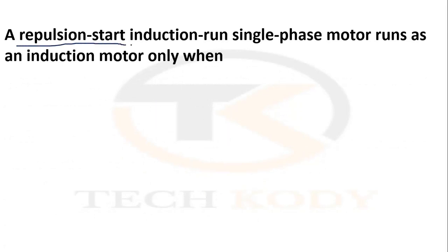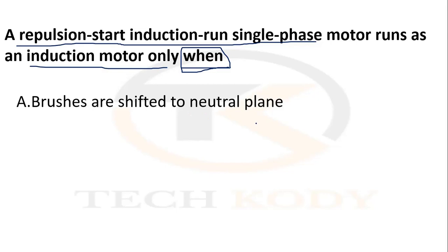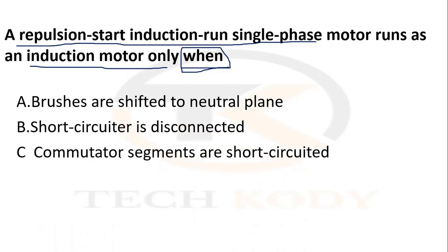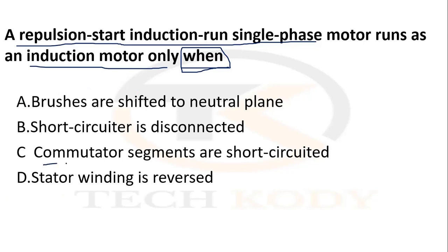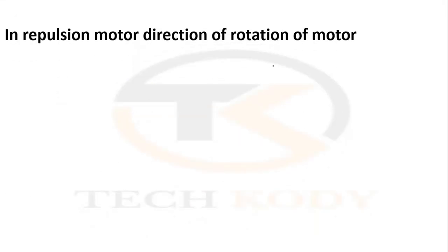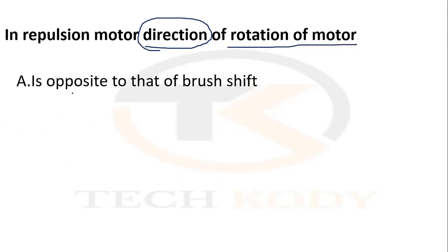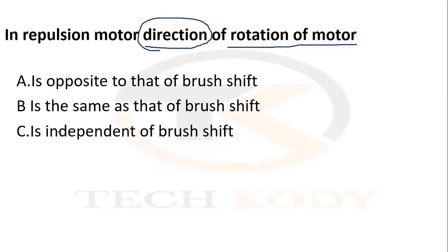When the brushes are shifted to the neutral plane, a repulsion-start induction motor runs as an induction motor only when the commutator segments are short-circuited — then only does it run as an induction motor. In a repulsion motor, the direction of rotation is the same as that of brush shifting.